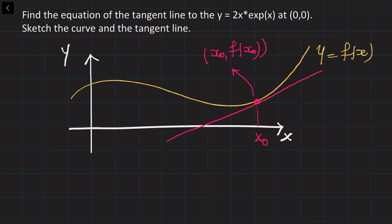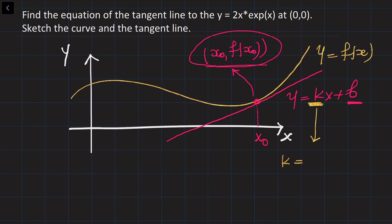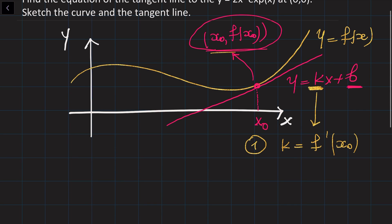As any other line, the tangent line is also going to have the typical equation in the form of y equals kx plus b, where k is going to be the slope and b is going to be the y-intercept. The problem is we are given one point, and we can find one of the parameters just using the coordinates of this point. We are going to find the slope of this line by taking the derivative of this curve at this point.